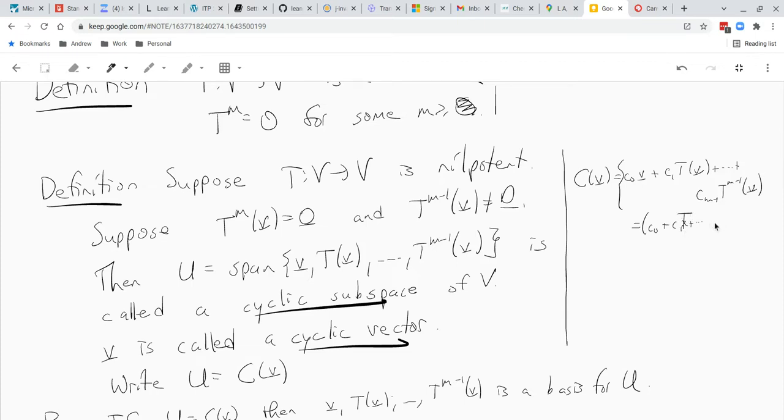Which we can rewrite that as a polynomial c 0 plus c 1 t plus c m minus 1 t to the m minus 1 of v, and this is, we can rewrite this as a polynomial p of t of v. Okay, so all the things in the cyclic subspace look like some polynomial p of t applied at v.